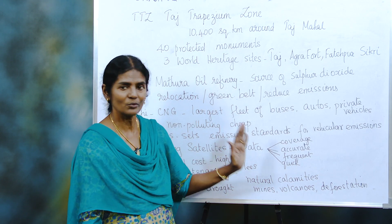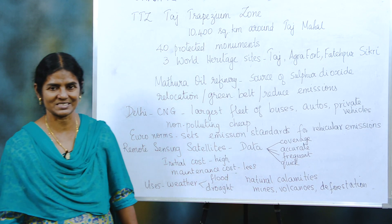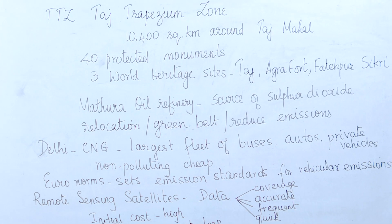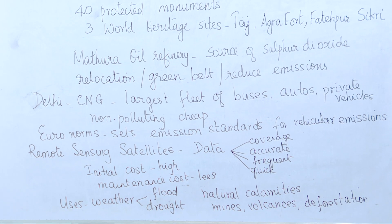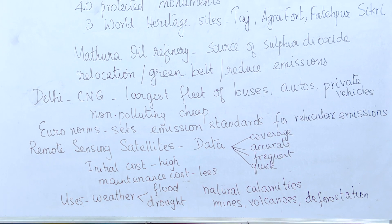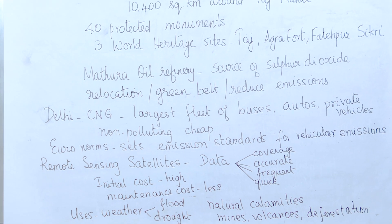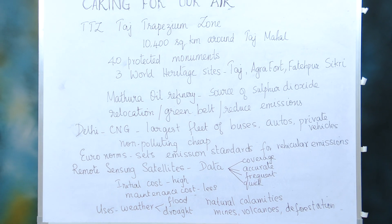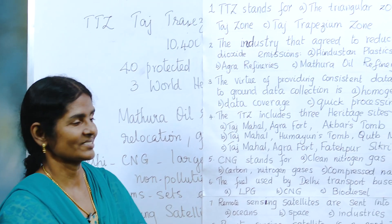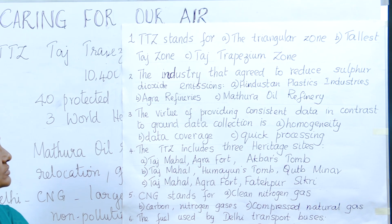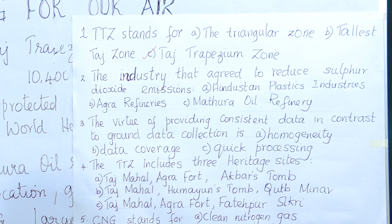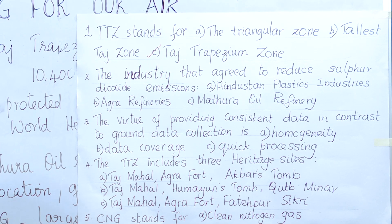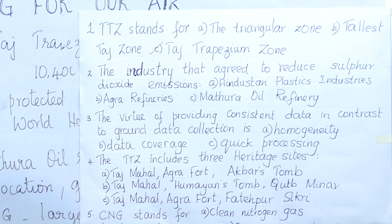Now we go on to the MCQs. The first one: TTZ — what does it stand for? Is it triangle? No. Is it the Tallest Thage Zone? No. It is the Taj Trapezium Zone. Remember the word trapezium — the shape of that zone is a trapezium, so it is the Taj Trapezium Zone.